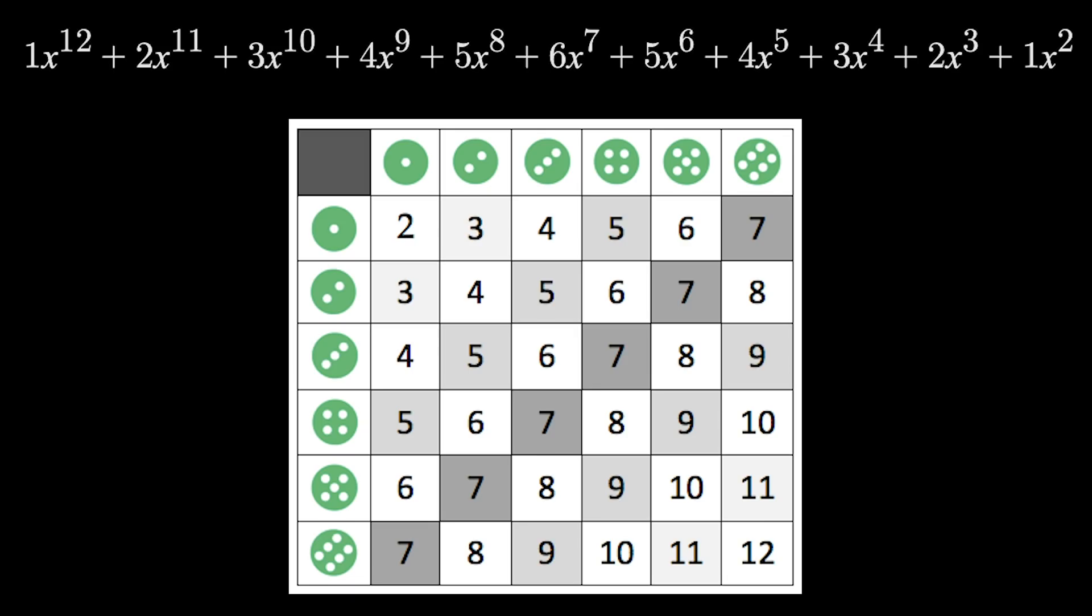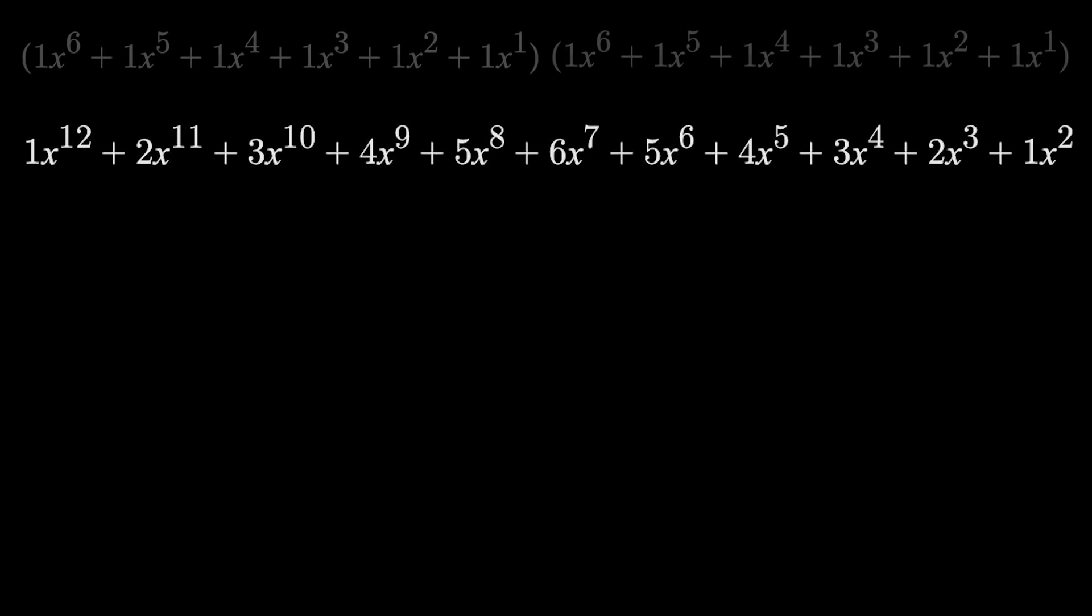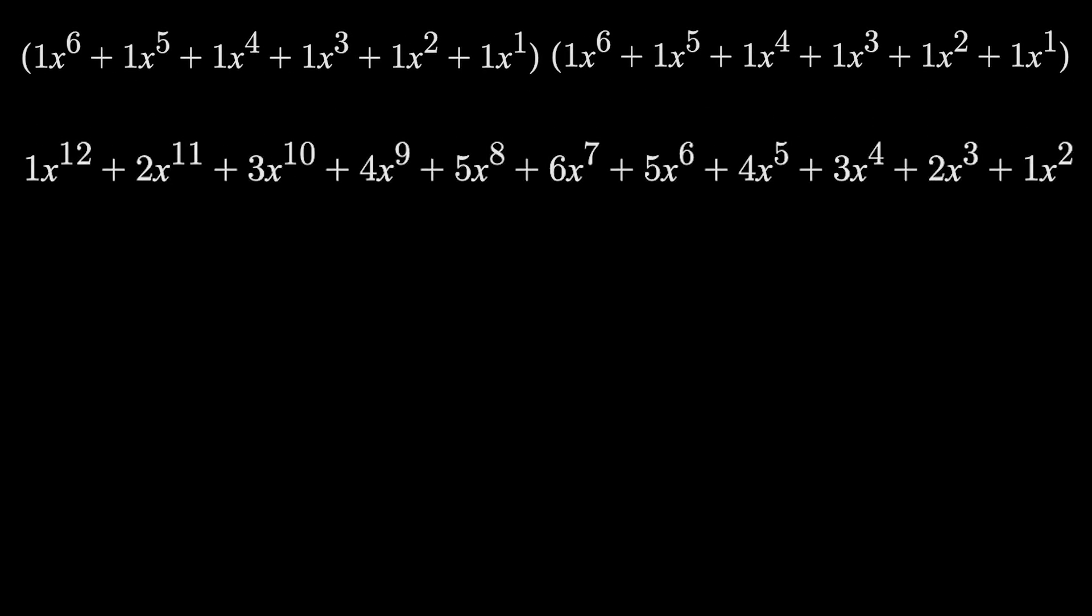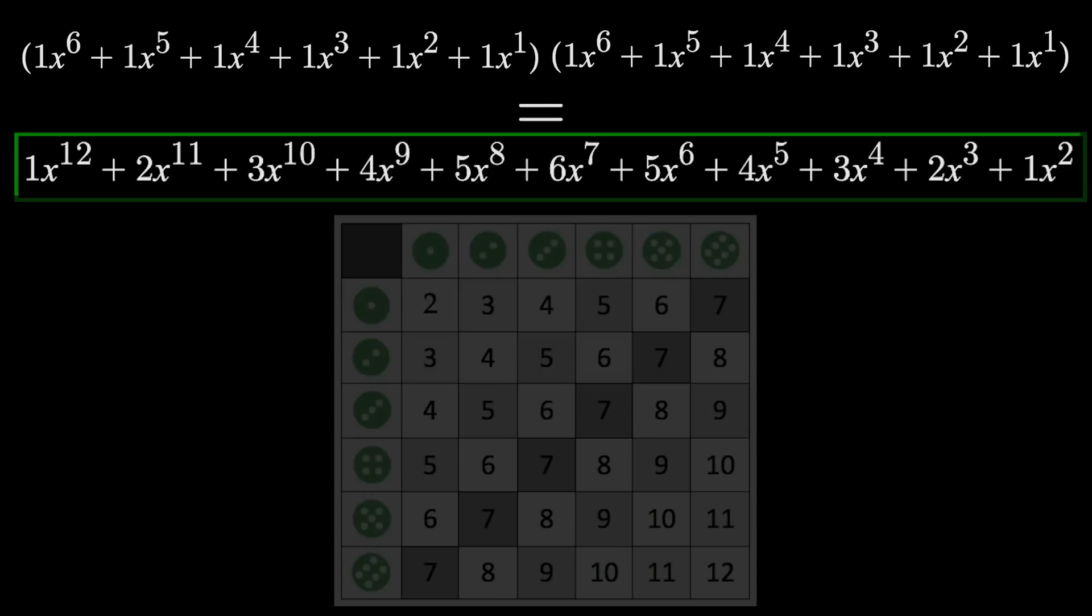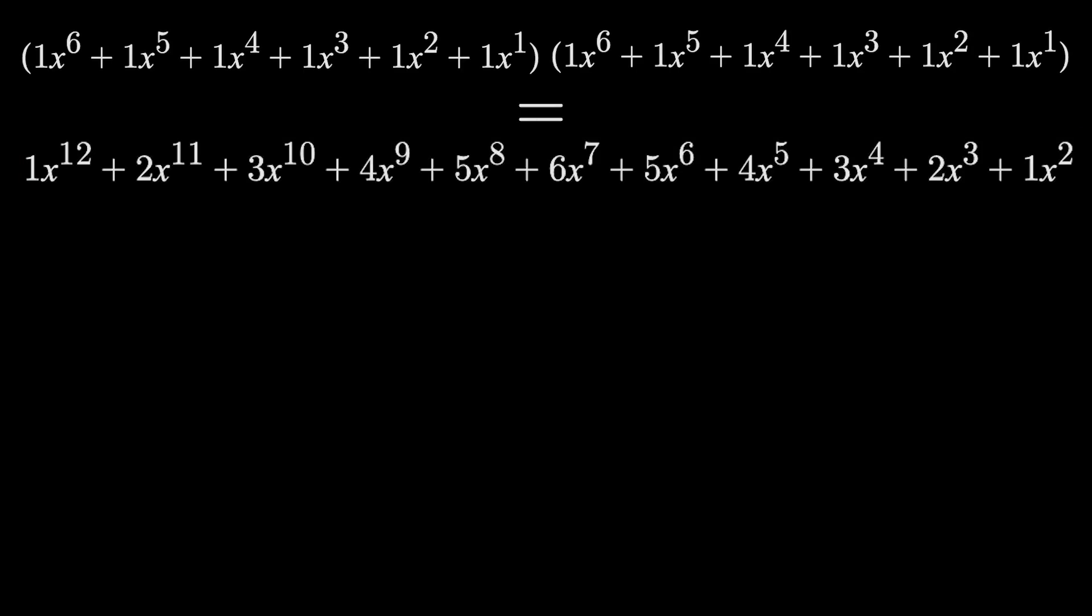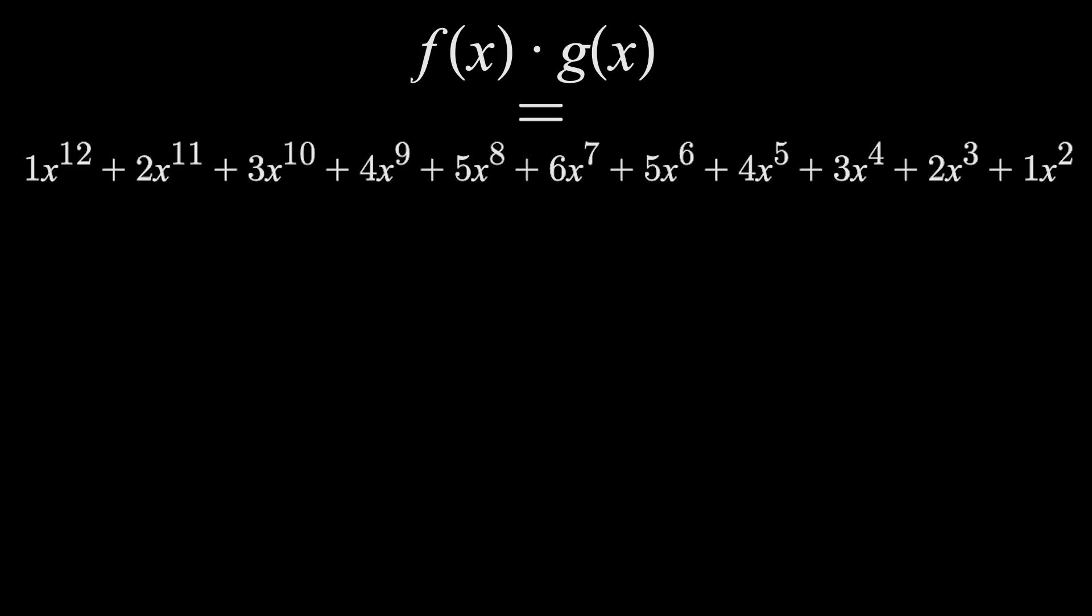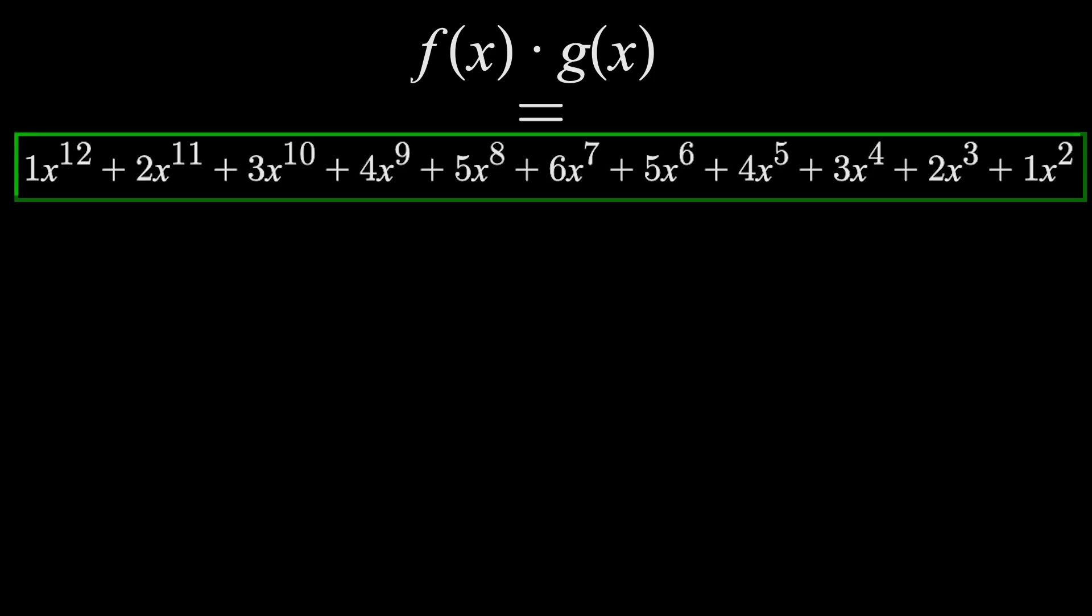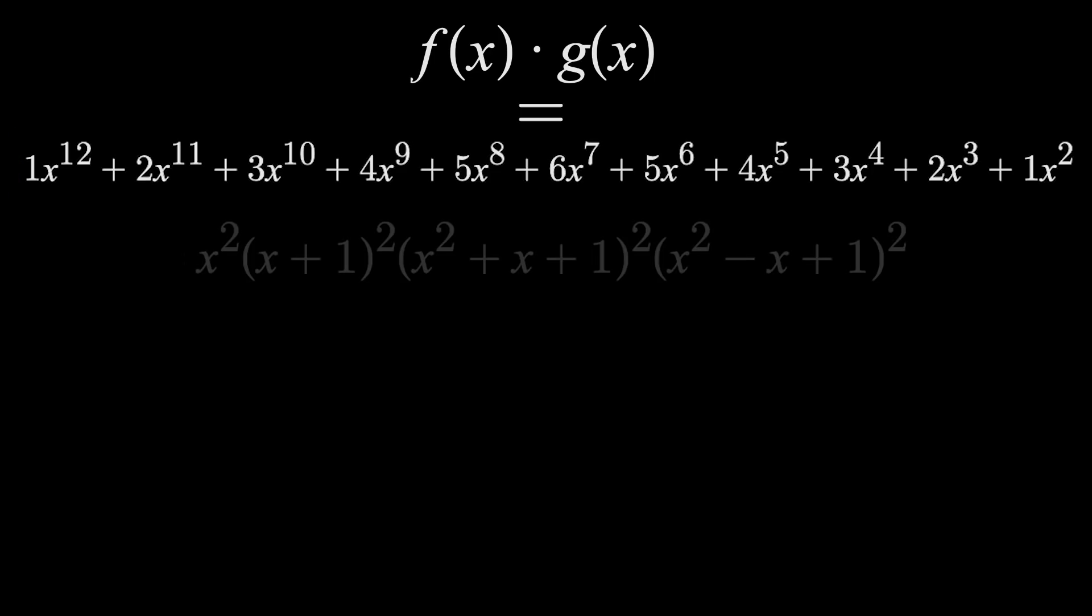So now we know we can take two generating functions, whose coefficients and exponents tell us exactly how to label each die, and their product reveals the table of all possible sums. Thus to find another pair of dice with that same table of sums, we just need to find two different functions that still have that same product. Now I'm going to do some hand-waving here and avoid the detail, but this polynomial can be factored as such.